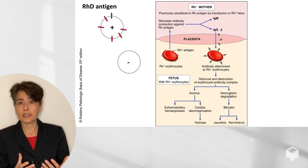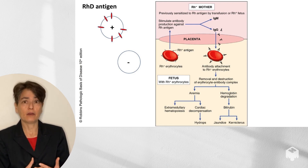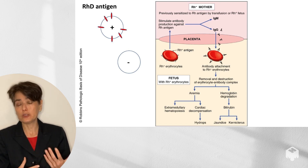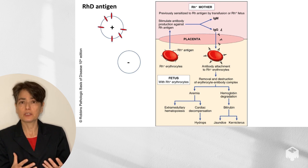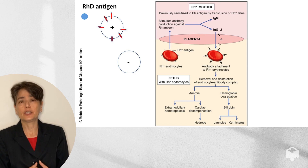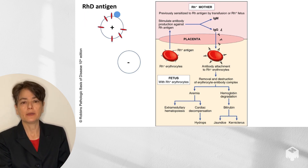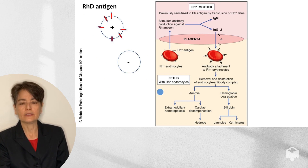Let's go through RH incompatibility in more detail. It's not as common in higher-resource countries because we have prophylaxis, but it used to be the major cause of fetal hydrops, so it's worth understanding the pathophysiology. There are multiple RH antigens, and the D antigen is the primary cause of incompatibility between mother and fetus. You can have a positive or negative allele. If positive, you will have the transmembrane RH protein on your red cells; if negative, you don't. If the fetus is RH positive, those RH-positive red cells can cross the placenta through the cytotrophoblast or during birth.